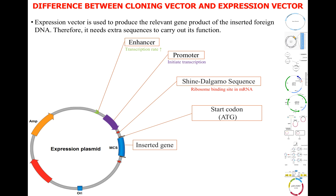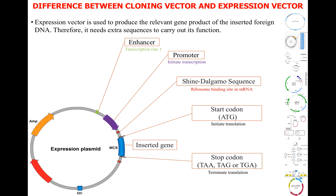The start codon AUG encodes for methionine. The stop codon, or termination codon, is one of three codons: TAA, TAG, or TGA for DNA, and UAA, UAG, or UGA for messenger RNA. The stop codon terminates translation by binding release factors, which cause the ribosomal subunits to dissociate and release the amino acid chain. Finally, the terminator sequence can pair with itself to form a stem-loop structure to terminate the transcription of the inserted gene. In summary: the promoter initiates transcription, the terminator terminates transcription, the start codon initiates translation, and the stop codon terminates translation.